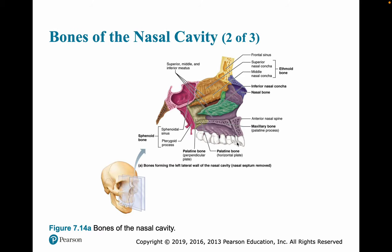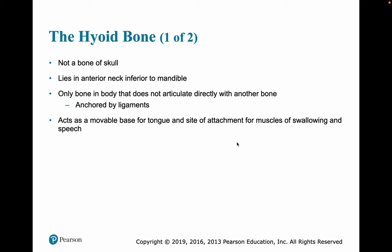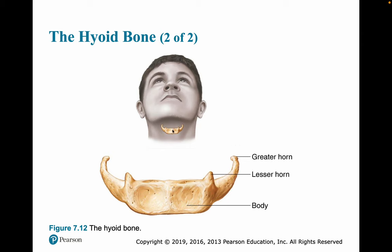The hyoid bone is everybody's favorite bone. It's not a bone in the skull but doesn't really fit anywhere else. It's in the anterior neck, just below the mandible, and is always on anatomy trivia questions because the hyoid bone is the only bone in the body that does not directly articulate with any other bone — it's not connected to any other bone. It's anchored in place by ligaments and serves as a movable base for the tongue and a site of attachment for muscles used in swallowing and speech.